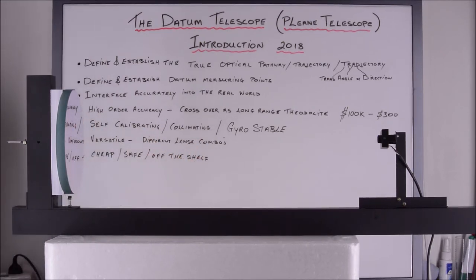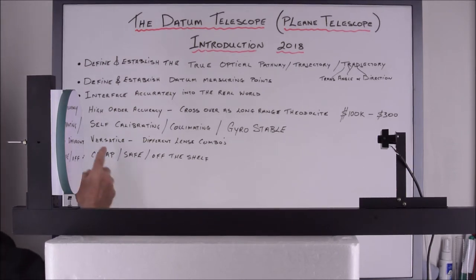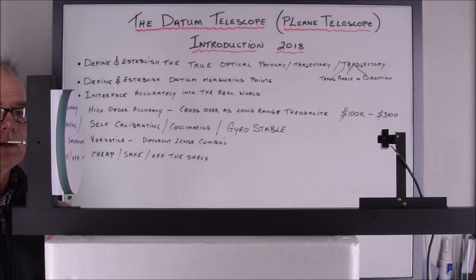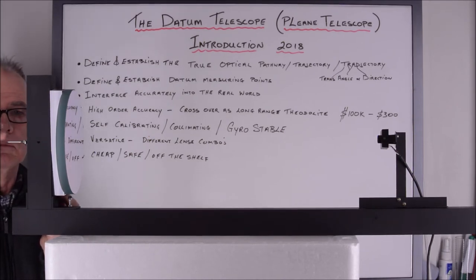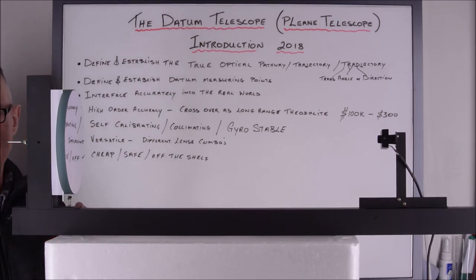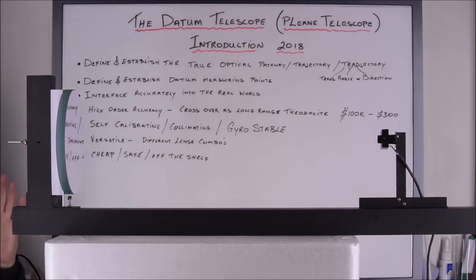I believe, again, this system is so accurate it could be used as a long-range theodolite. It's self-calibrating. This is just a prototype. The production model will have a motor that will spin this lens around at a certain revs, and it will self-calibrate, self-collimate. So, there's no need, this thing will, you'll pick it up off the shelf and install the mirror, and it will self-collimate.